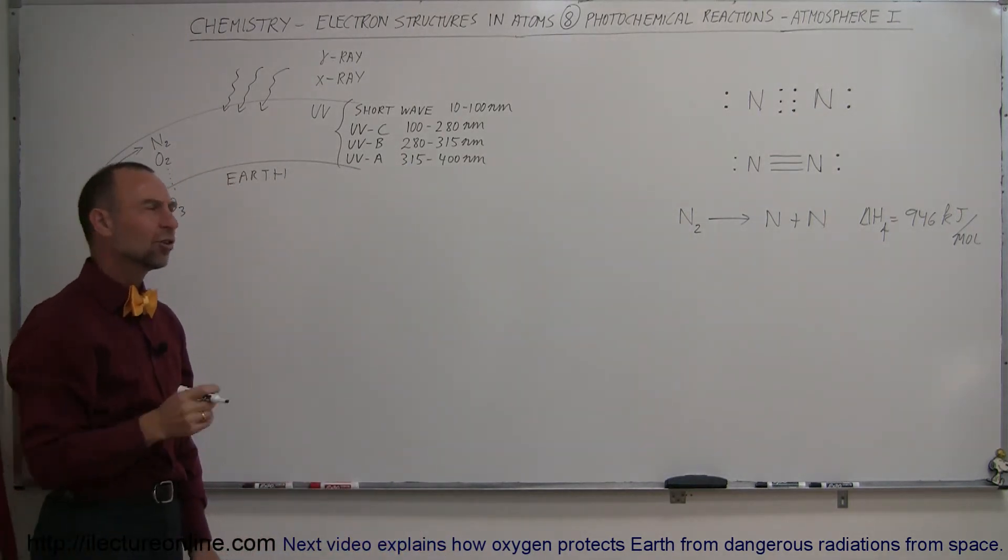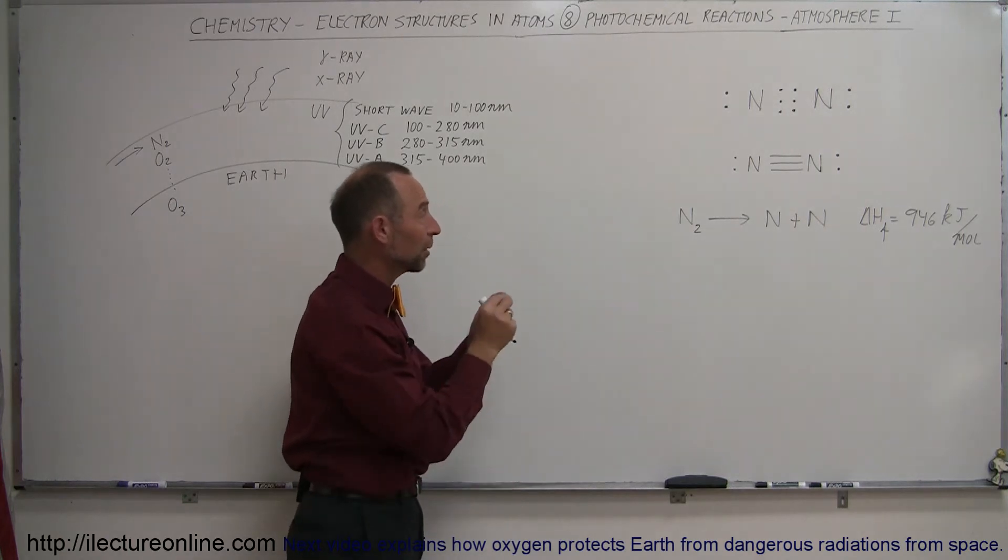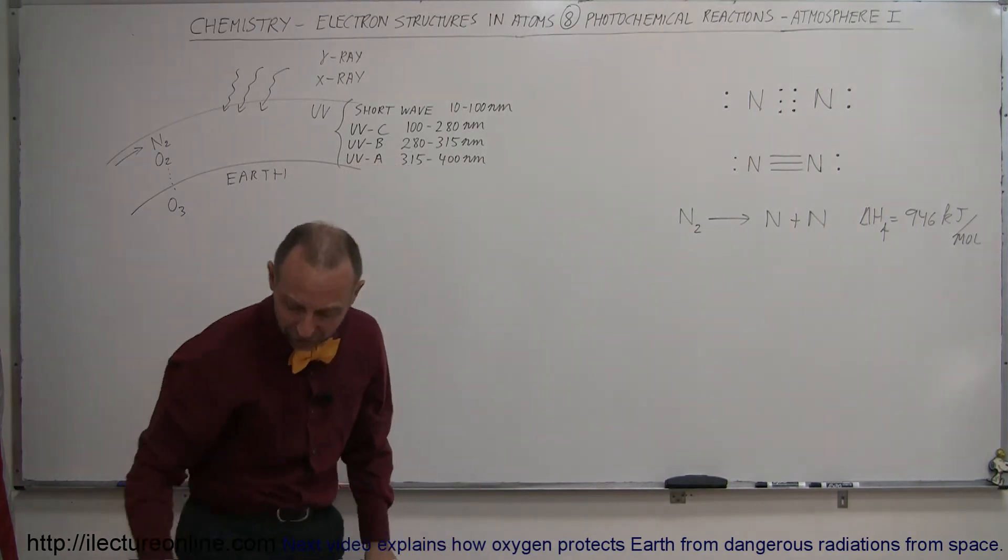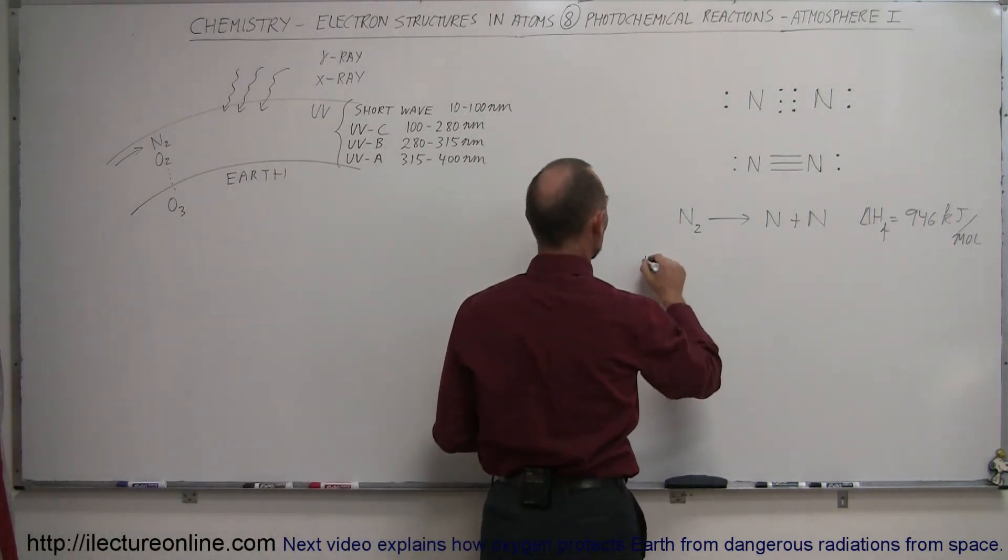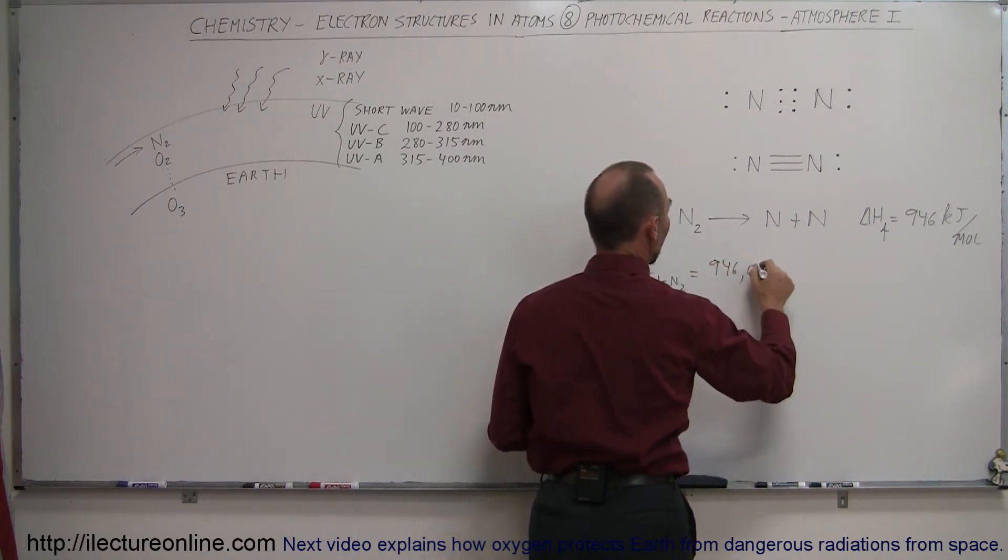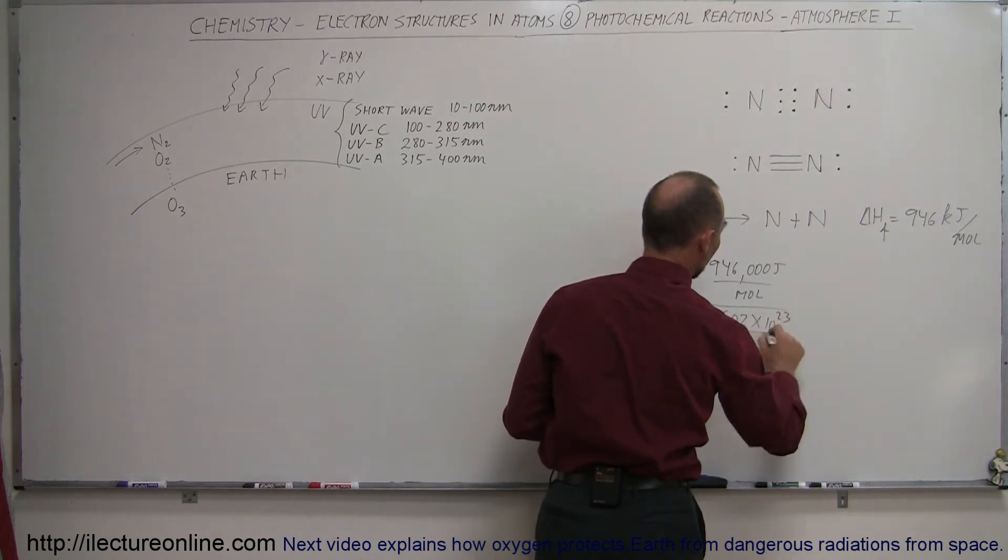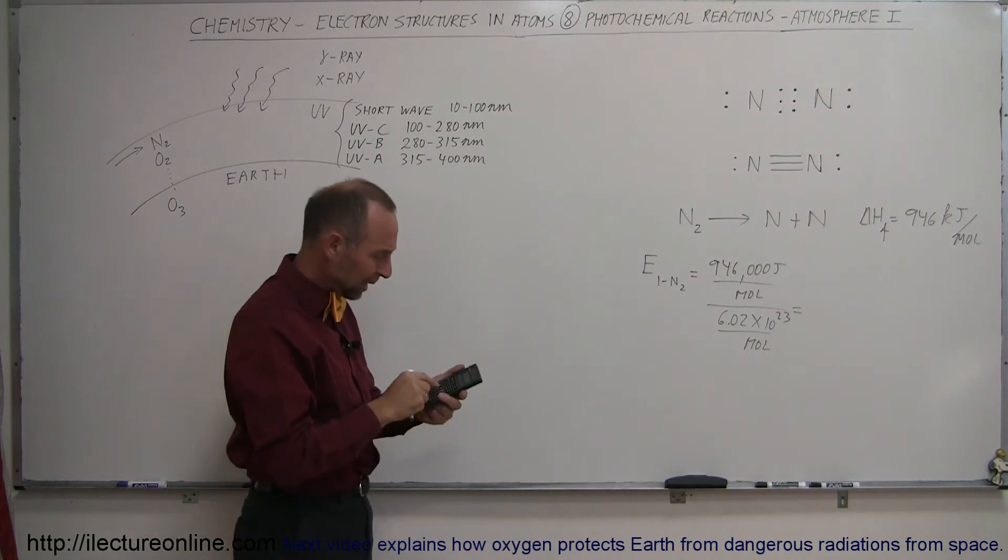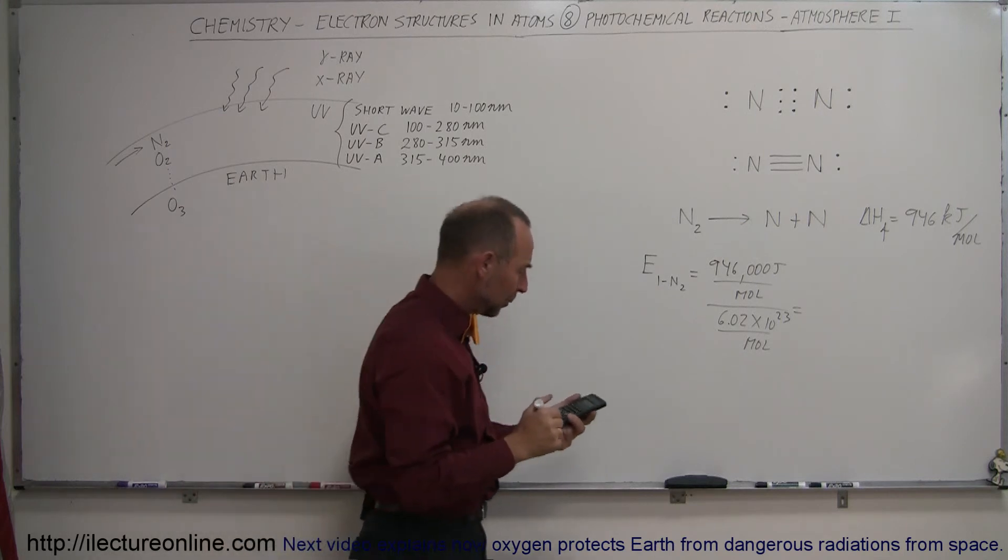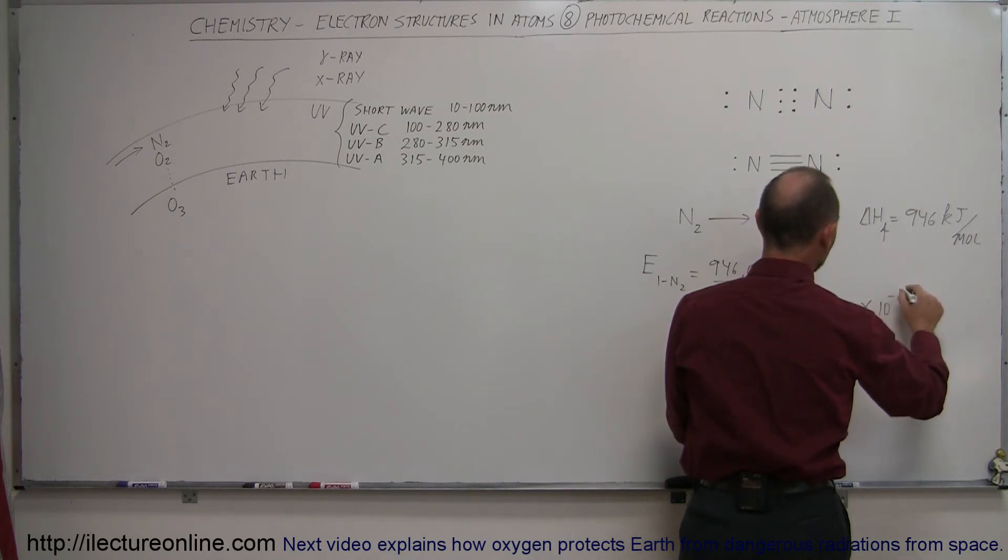How much energy does that require per atom? If we take this number and divide it by Avogadro's number, we have the energy it requires to split up a single molecule of nitrogen gas. So the energy for one nitrogen molecule equals 946,000 joules per mole divided by Avogadro's number, which is 6.02 times 10 to the 23rd per mole. We take 946,000 and divide it by 6.02e23.